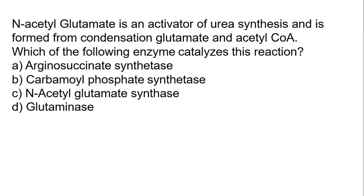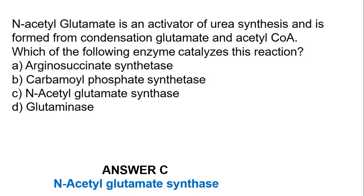N-acetylglutamate is an activator of urea synthesis and is formed from condensation of glutamate and acetyl coenzyme A. Which of the following enzymes catalyzes this reaction? The answer is simply C. Thank you very much for joining me. This was Dr. Possibility from Excel Academy. Please make sure that you subscribe to our YouTube channel and register with Excel Academy.